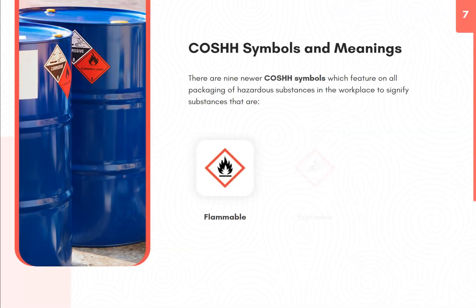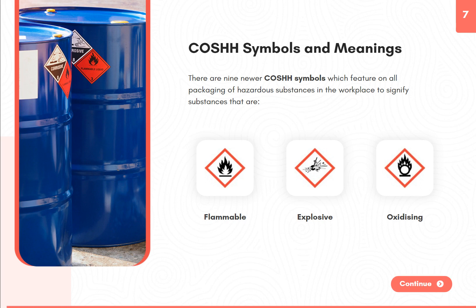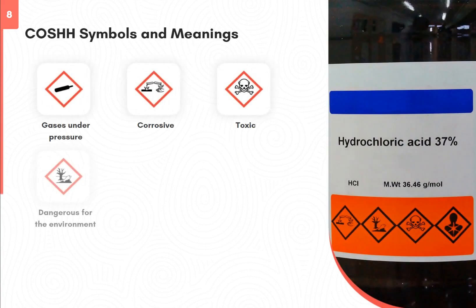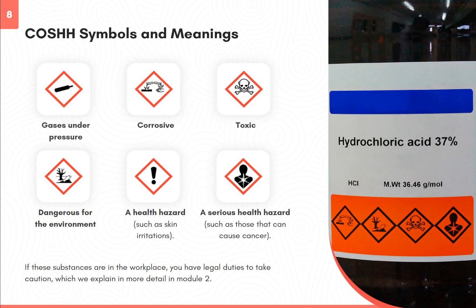There are nine newer COSHH symbols which feature on all packaging of hazardous substances in the workplace to signify substances that are: flammable, explosive, oxidising, gases under pressure, corrosive, toxic, dangerous for the environment, a health hazard such as skin irritations, and a serious health hazard such as those that can cause cancer. If these substances are in the workplace, you have legal duties to take caution, which are explained in more detail in module 2.